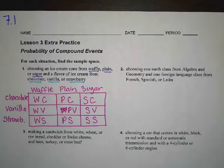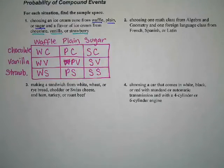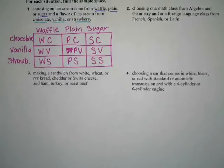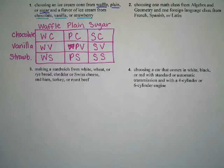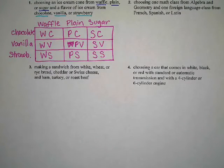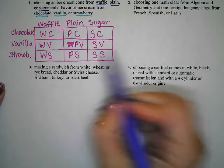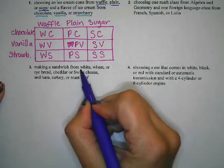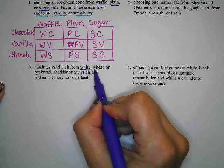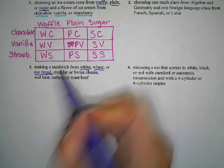Let's skip to number three. It says we're making a sandwich from white, wheat, and rye bread. We have a choice of cheddar or Swiss cheese, and then ham, turkey, or roast beef. So the first thing we have is white, wheat, or rye bread.